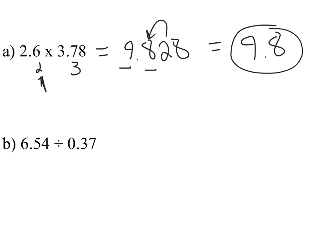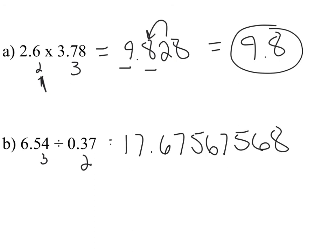For part B: one number has three significant figures and the other has two. Computing 6.54 ÷ 0.37 gives 17.675… in the calculator. I'm only allowed two sig figs, so counting 1, 2 — the 6 rounds up the 7, so my answer is 18. That concludes significant figures — I tried to keep it short and sweet.